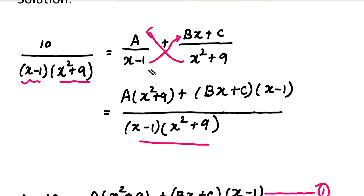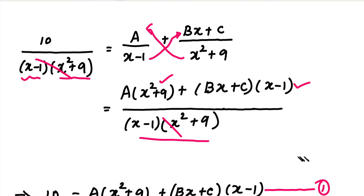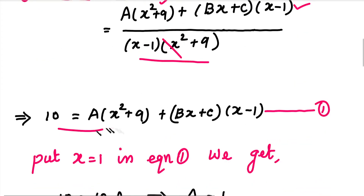We multiply the first denominator into the second numerator and the second denominator into the first numerator. Then we cancel the denominator from the left side and right side, so the left side numerator equals the right side numerator. This gives us equation number 1, which has three constants: A, B, and C.